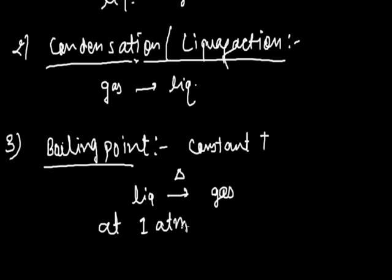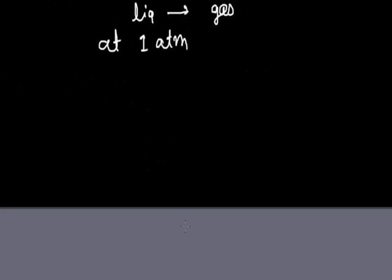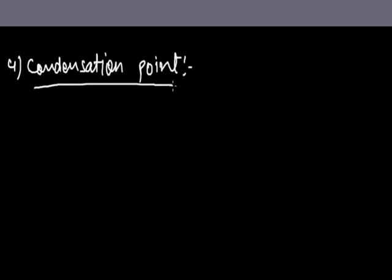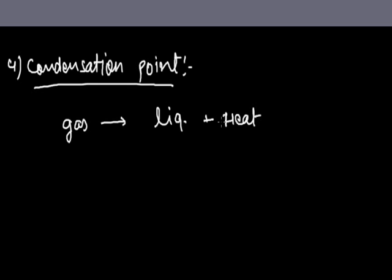The boiling point depends on the nature of the liquid. Condensation point is just the reverse of the boiling point — the constant temperature at which a gas is converted into liquid by giving out heat is known as the condensation point. This process also occurs at one atmosphere pressure.